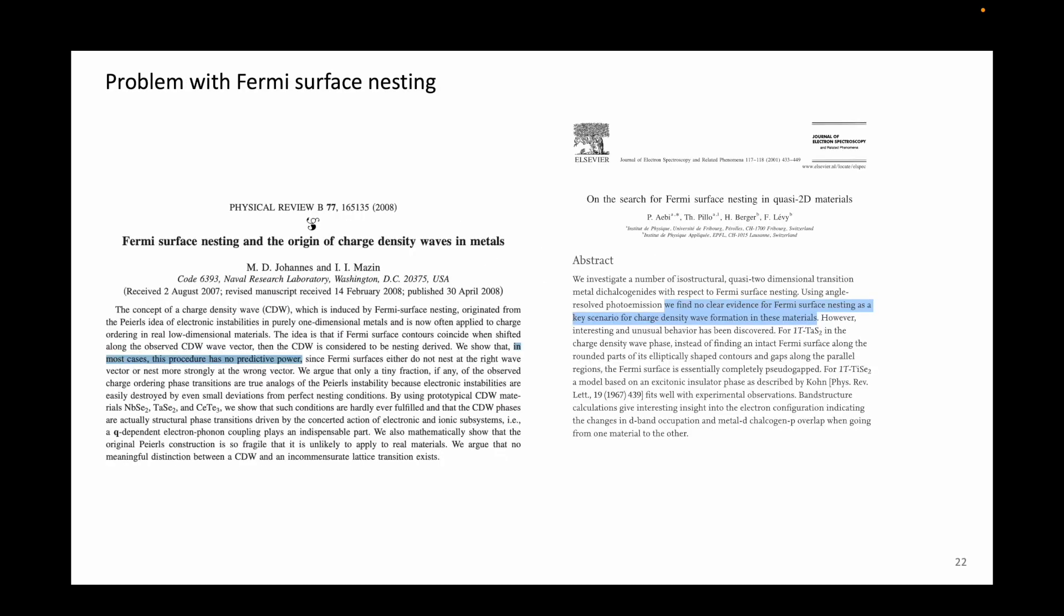Well, it turns out that the Fermi surface nesting picture fails in 2D and 3D, and is an unreliable predictor of charge density waves in general, as argued by most of the recent works on this topic. Many 2D and 3D systems display charge density waves, and yet, according to the Fermi surface nesting criterion, they shouldn't have the charge density wave state.